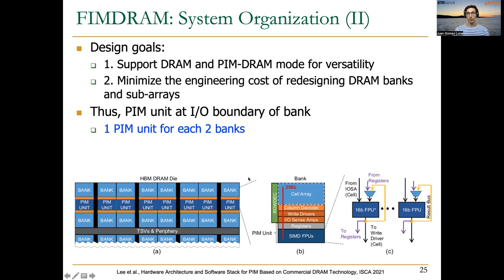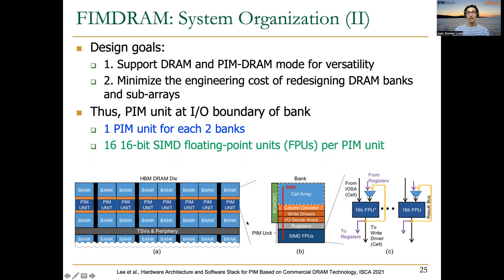This PIM unit is basically a SIMD unit, as we see in this part of the figure. These SIMD units have 16 lanes, and the width of each lane is 16 bits. These are floating-point units and are able to execute multiply and accumulate operations and multiply and add operations.